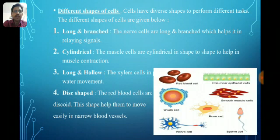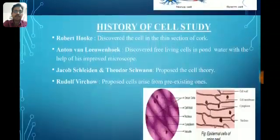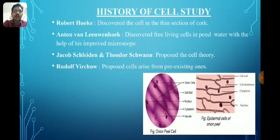Disc shaped — the red blood cells (RBCs) are discoid, that is disc shaped. This shape helps them to move easily in narrow blood vessels. From all these points it is clear and can be concluded that the shapes of cells are related to the function they perform.